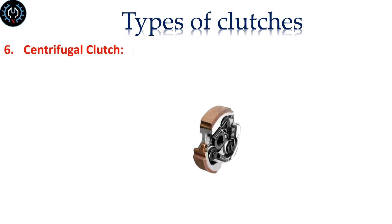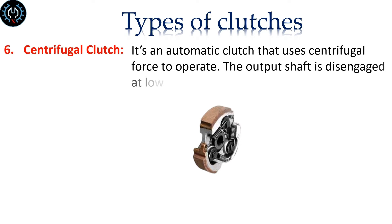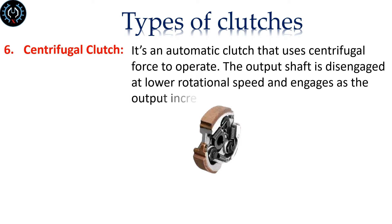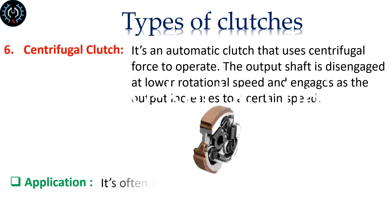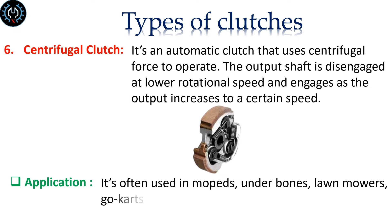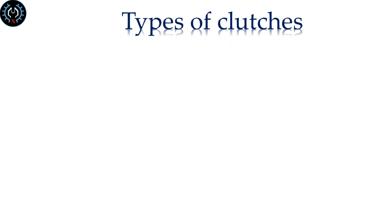Centrifugal clutch. It's an automatic clutch that uses centrifugal force to operate. The output shaft is disengaged at lower rotational speed and engages as the output increases to a certain speed. It's often used in mopeds, underbones, lawn mowers, go-karts, chainsaws, minibikes and some paramotors and boats.